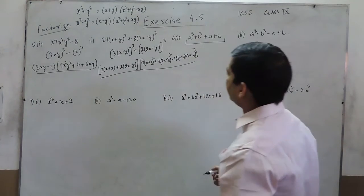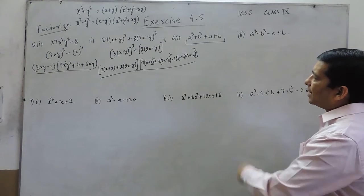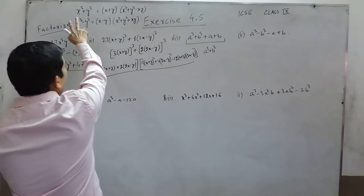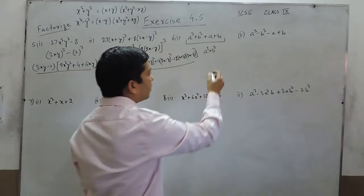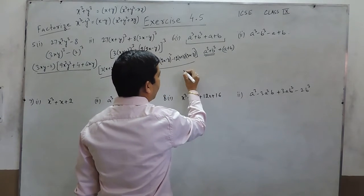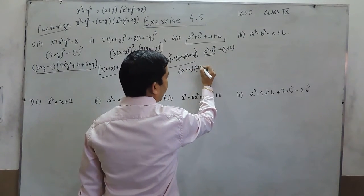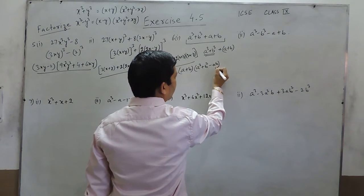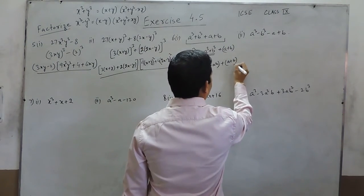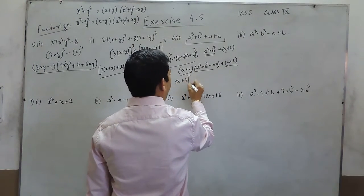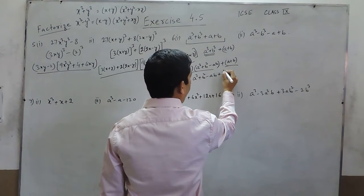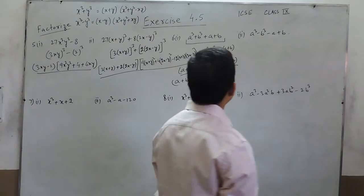Now we look at question number 6, part 1: a³ + b³ + (a+b). Here a³+b³ can be factorized using the x³+y³ formula, and the remaining term (a+b) is taken in a bracket. So it becomes (a+b)(a²+b²-ab) plus (a+b). Taking (a+b) as common, we get (a+b)(a²+b²-ab+1).